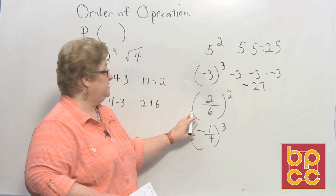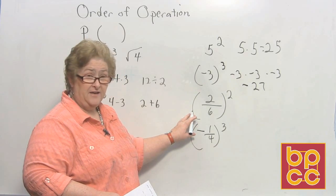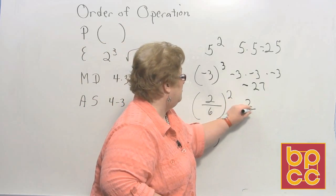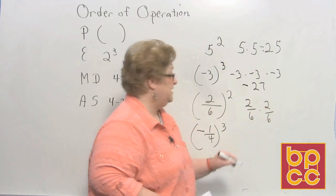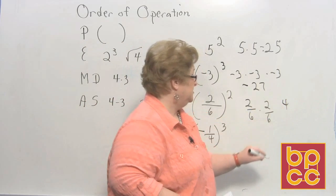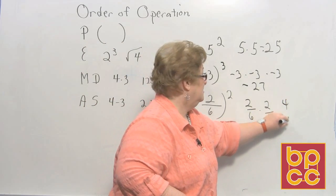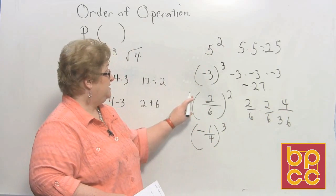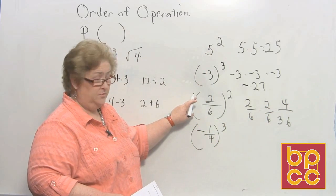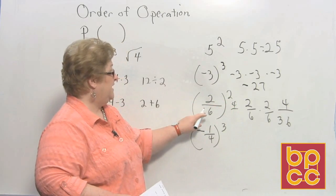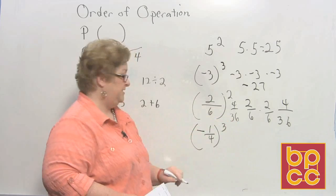On the fraction one we know that that is supposed to be 2/6 times 2/6. And so I'll write 2/6 times 2/6. And when you multiply 2 times 2 is 4. And 6 times 6 is 36. Another way to look at it would be take each number and treat it like a whole number. 2 squared is 4 and 6 squared is 36.